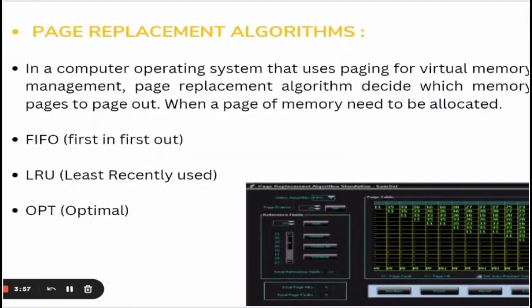There are some paging replacement algorithms as well. In a computer operating system that uses paging for virtual memory management, a page replacement algorithm decides which memory pages to page out when a page of memory needs to be allocated. There are three algorithms for paging: first is FIFO (First In First Out), second is LRU (Least Recently Used), and third is OPT which stands for Optimal.